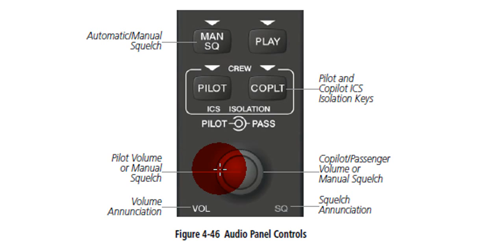Once we have that, we're going to adjust the volume levels for the comms and navs to a suitable level, and that's done by rotating the volume knobs on the primary flight display. Next, we're going to adjust the pilot passenger knob volume to get the desired intercom level.